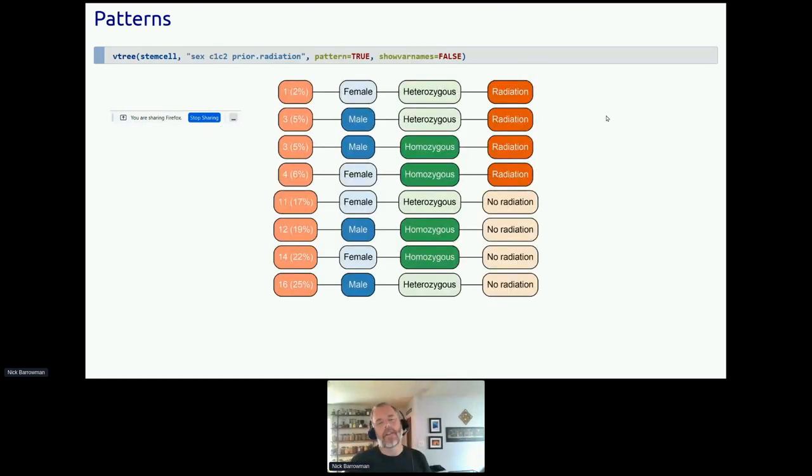And now I'm going to look at another pattern tree. This time I've got multiple variables. I'm looking at sex. I'm looking at a genotype variable. So they're heterozygous or homozygous. And then also whether they received radiation prior to the transplant. And again, they're ordered from the most frequent at the bottom to the least frequent at the top. So this lets you look at combinations of values. The most frequent pattern here is male, heterozygous, no radiation.